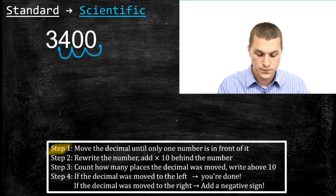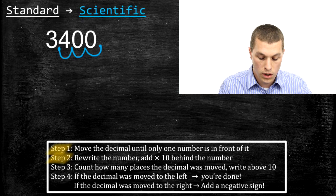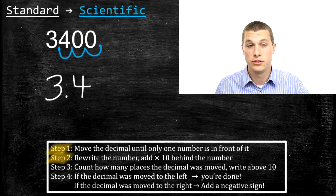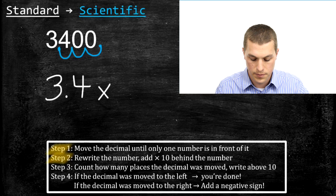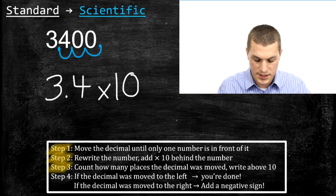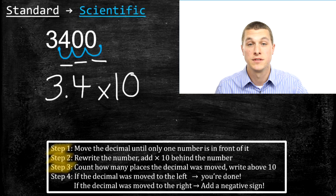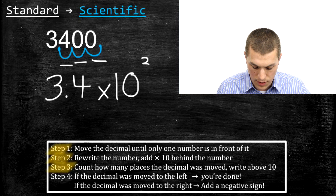Notice that only the three is left in front of the decimal. Step two: we're going to rewrite that number and add a times ten. So we write 3.4 — because we've moved our decimal. You could write those two zeros, but it's not necessary. So we drop those zeros and put a times ten. Step three: count how many times we've moved our decimal — once, twice, three times. That's the number you write in your exponent, the number above the ten, so we write a three above it.